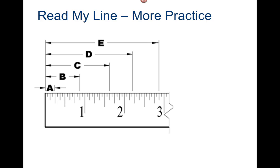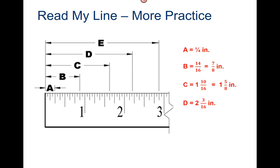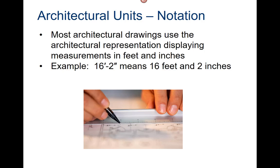Practice. A equals one quarter inch. What does B equal? Seven eighths of an inch. How about C? One and five eighths inches. How about D? Two and three sixteenths. How about E? Two and seven eighths.